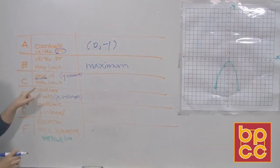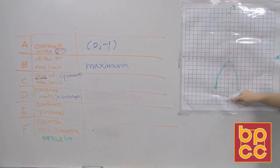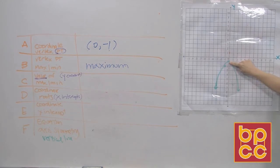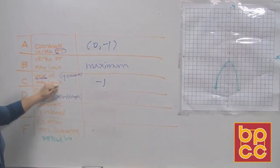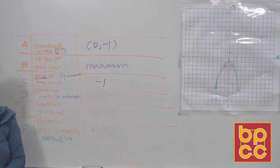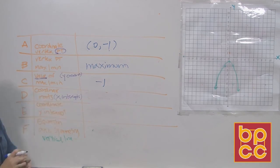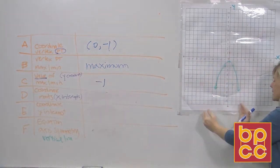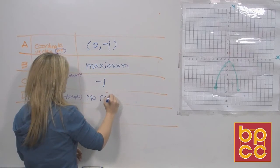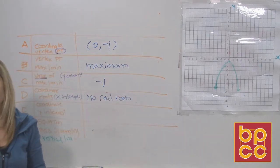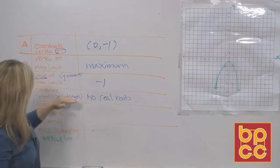They want to know the value of the maximum — the value means the y value. This curve is going to go down and down, covering lower and lower y values. The highest y value this curve has is negative 1. So when they ask for the value of the max or min, they're asking for the y coordinate of the vertex point. For the roots: this curve is going down and will never touch the x-axis, so we say this parabola has no real roots — it has imaginary roots that you can't see.